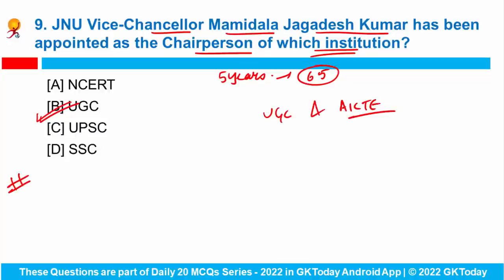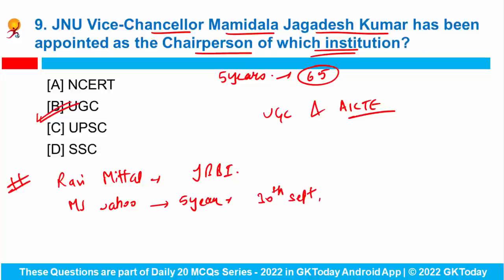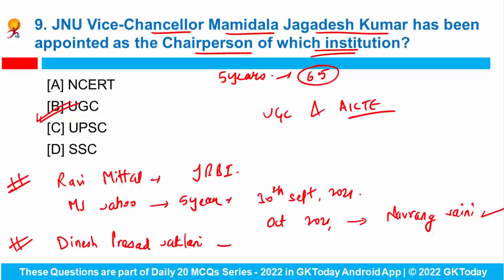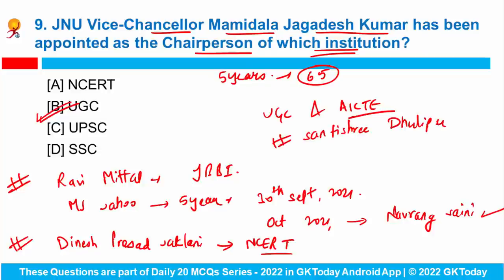The government has also appointed former civil servant Ravi Mittal as the chairperson of the Insolvency and Bankruptcy Board of India. M.S. Sahoo, who was the first chairperson, completed his five-year term on 30th September 2021, and in October 2021, IBBI whole-time member Navarang Saini was given additional charge as chairperson. Additionally, Professor Dinesh Prasad Saklani is the new director of NCERT — National Council of Educational Research and Training. Santhi Shri Dhulipudi Pandit is the first woman Vice Chancellor of JNU.